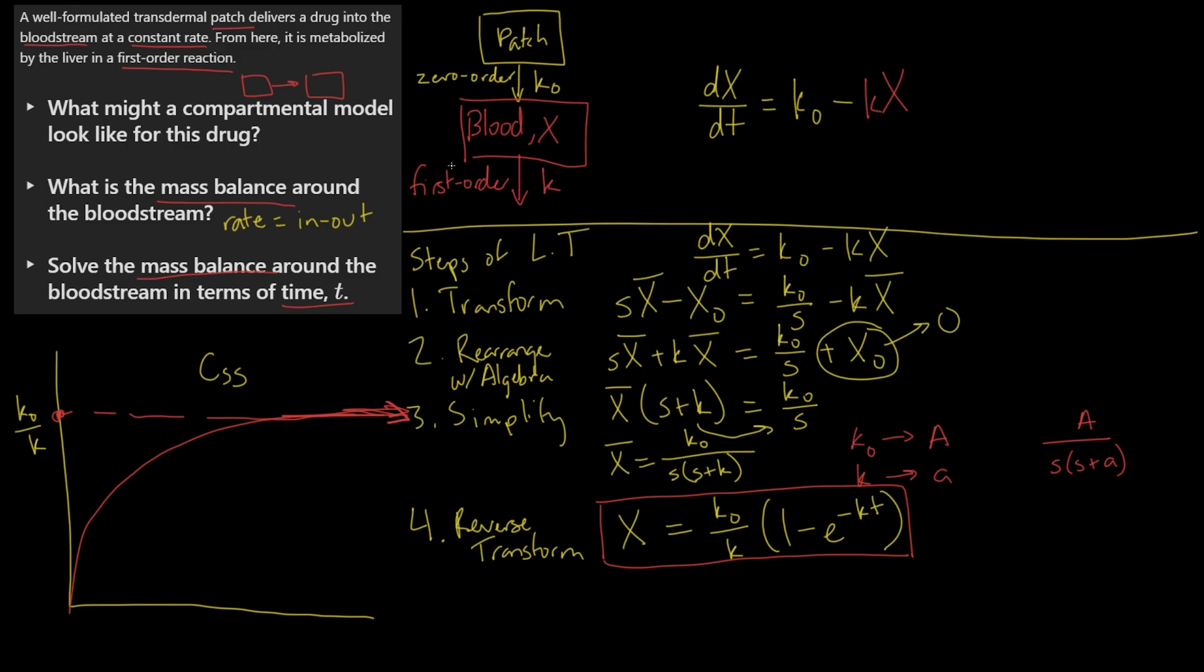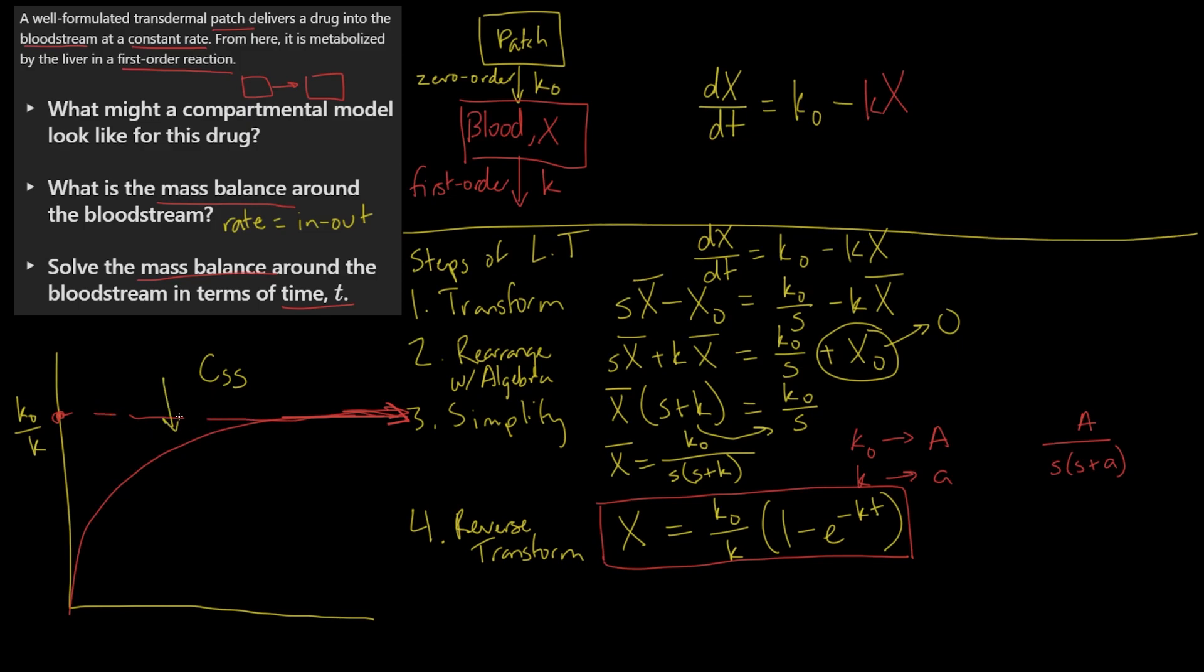As you fill drug into the bloodstream, as time goes on, you increase and increase and increase your infusion. You're actually increasing your first-order excretion or metabolism also, which causes this asymptote. Because the pressure of the excretion is causing this to tend towards an asymptote, and so this kind of thinking will be useful in the future chapters.